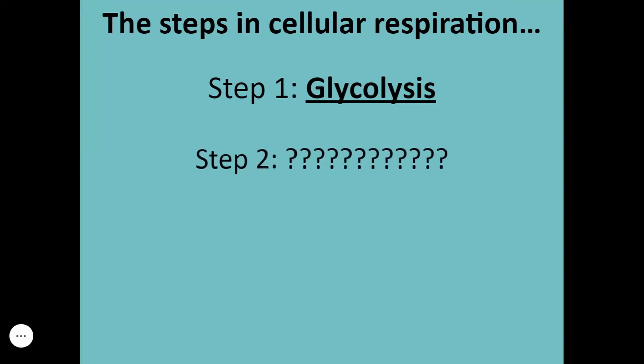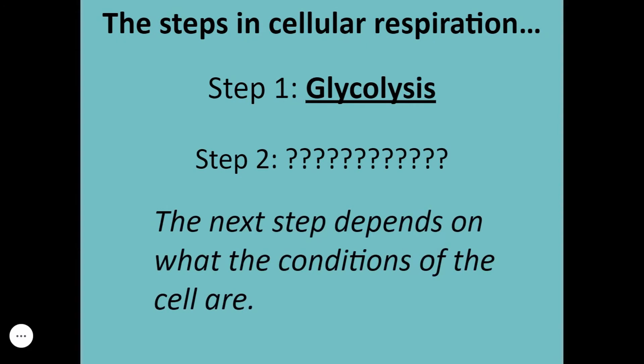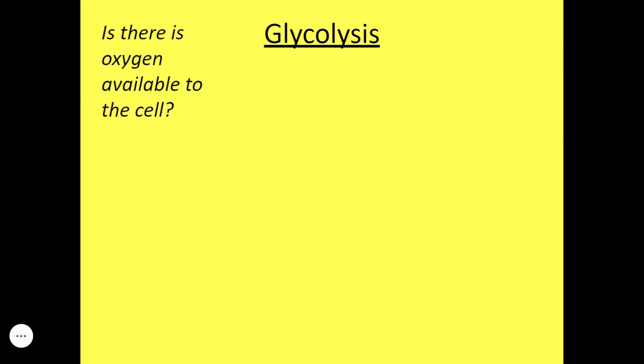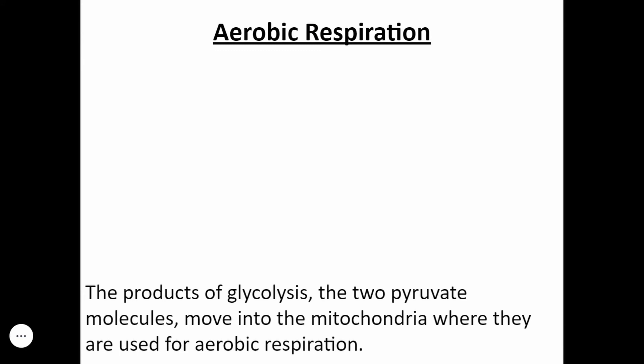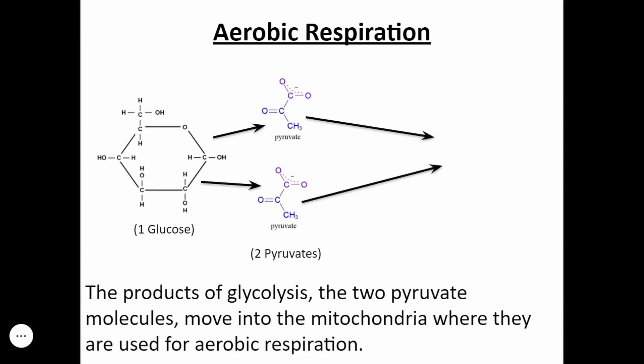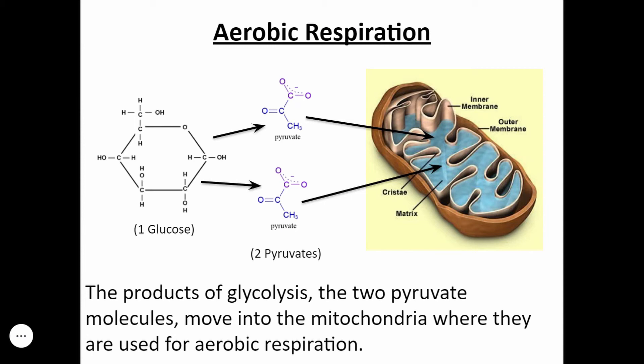After we finish glycolysis, the cell has only used 10% of a glucose molecule. So that means that the process has to continue. Step one was glycolysis. Now, what's step two? Well, that kind of depends on what conditions the cell is under. After glycolysis, we have to stop and think, is there oxygen available to the cell? If yes, then we'll undergo aerobic respiration. If not, we'll undergo anaerobic respiration. First, let's talk about aerobic respiration. So the product of glycolysis, which are two pyruvate molecules, will then move into the mitochondria where they're used for aerobic respiration. We took a glucose, we broke it into pyruvate in glycolysis. Now that pyruvate is going to go into the mitochondria, into the mitochondrial matrix.